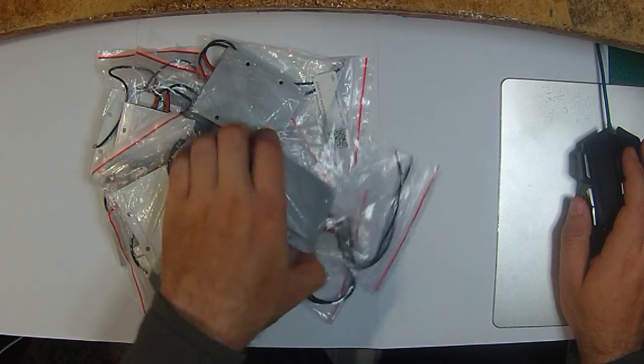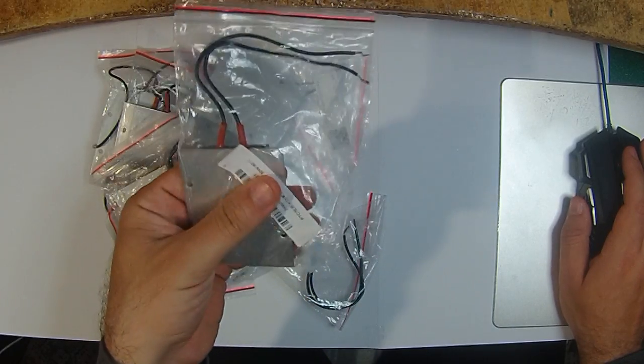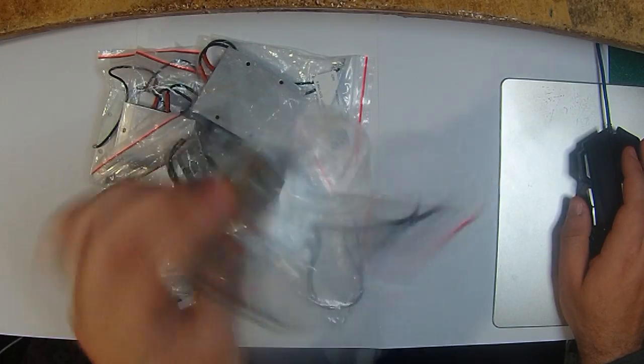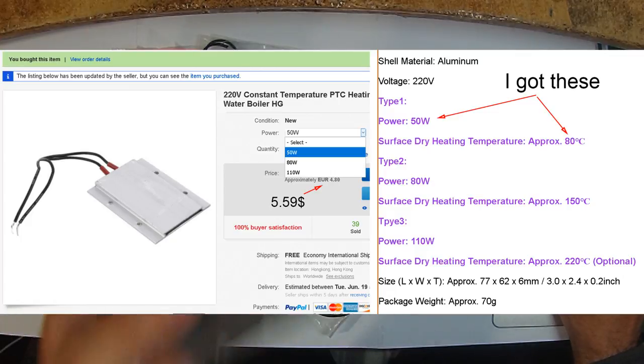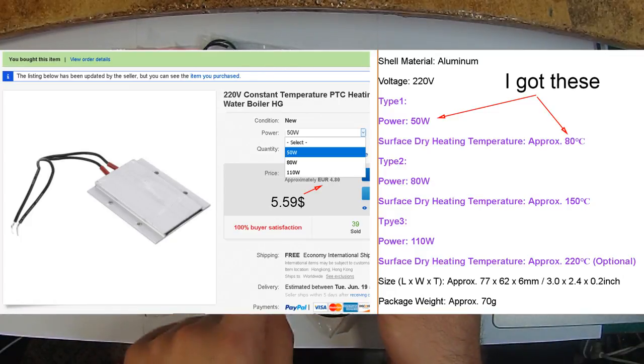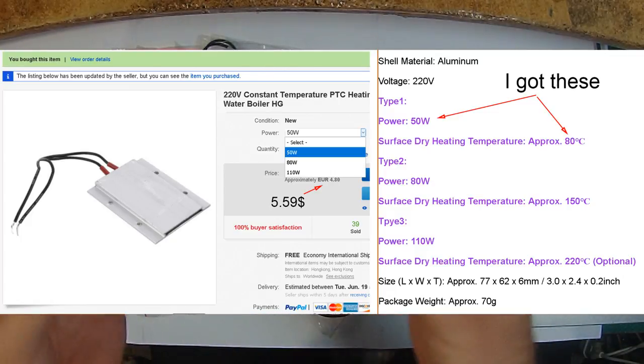That's a 220 volt heating module. It has 50 watts, 80 watts, and 110 watts. The difference in these three is that they reach a specific temperature where they just stop. You don't need a sensor with that.